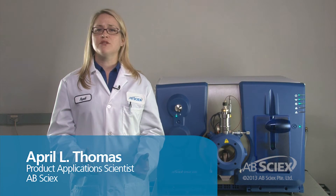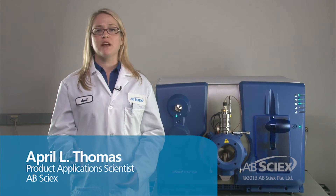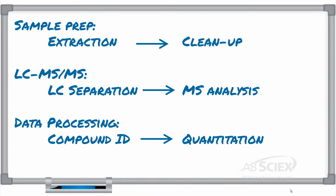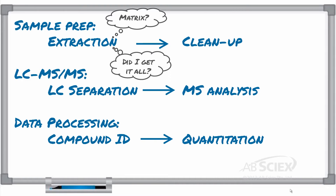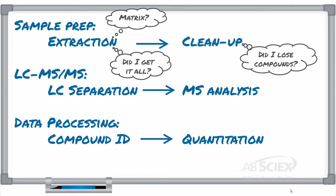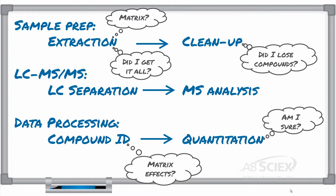Consider your average method. You start with the sample extraction and cleanup, then move on to the LC separation and MS analysis, then you have the data processing to identify and quantify various residues in your unknown samples. And then consider some of the questions, concerns, and headaches that you probably experience every day: What is the matrix? Did I extract everything? Did I lose compounds in the cleanup? Are matrix effects complicating my results? Am I certain of the positive findings?